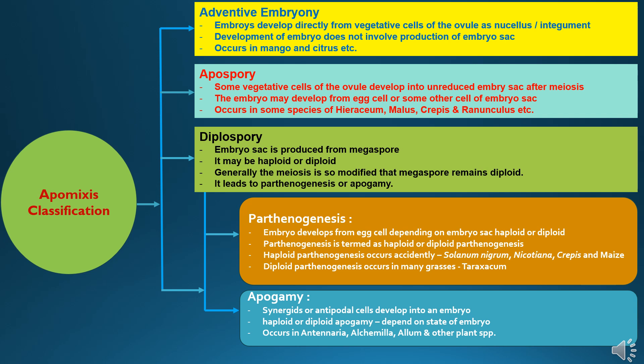The second type of apomixis is apospory, where some vegetative cells of the ovule develop into an unreduced embryo sac after meiosis, and the embryo may develop from the egg cell or some other cells of the embryo sac. It occurs in some species of Hieracium, Crepis, and Ranunculus, etc.